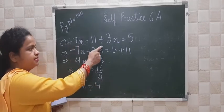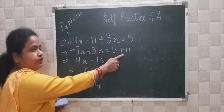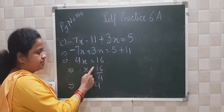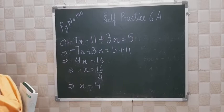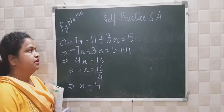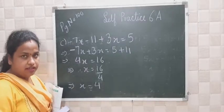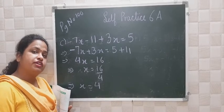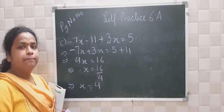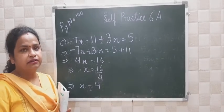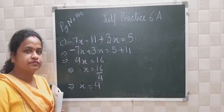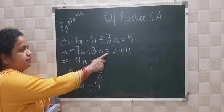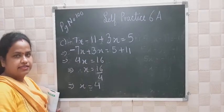So for part C: minus 7x plus 3x you write together, and 5 with minus 11 going towards the right hand side becomes plus 11. So 5 plus 11 equals 16, and x equals 16 by 4, so x equals 4. Just remember: when you change the side, signs change — plus becomes minus, minus becomes plus, multiply becomes divide, and divide becomes multiply. That's the rule for changing sides.